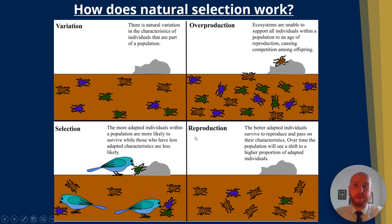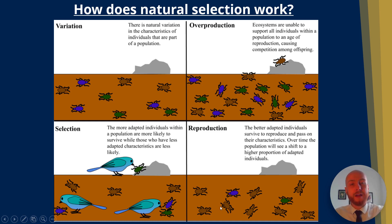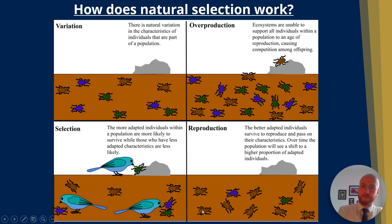Finally we have reproduction. Because those brown beetles survived, they mate and reproduce, leading to greater numbers of brown beetles in future generations. The brown colouring is based on an allele that has been selected for — and that is natural selection: the natural selection of certain alleles over others.